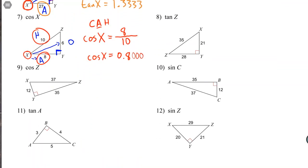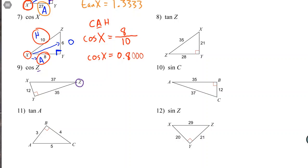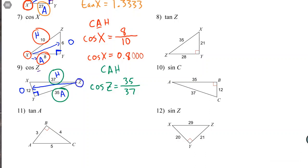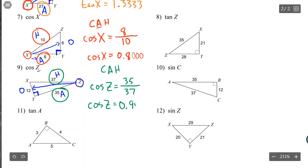This triangle is a bit twisty, but we can figure it out. Cosine of Z — circle Z. Label sides: the hypotenuse is up top across from the right angle. Across from Z to the left is the opposite. The side remaining is the adjacent. CAH: cosine equals adjacent over hypotenuse. So cosine of Z equals 35 over 37, which is 0.9459.